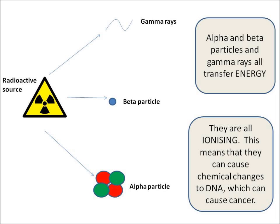This is about ionizing radiation. A radioactive source like plutonium or uranium may emit or give out three different types of radiation.